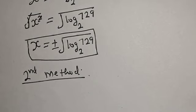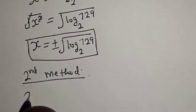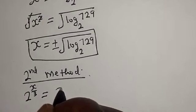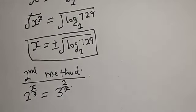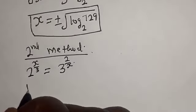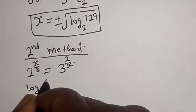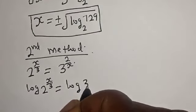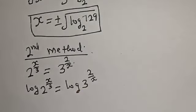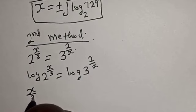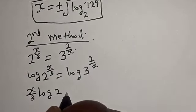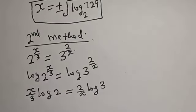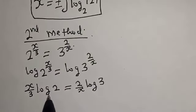Now let's consider the second method. We have the given equation: 2 raised to power x over 3 is equal to 3 raised to power 2 over x. Let's take the log of both sides: x over 3 log 2 is equal to 2 over x log 3.